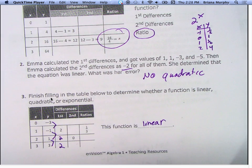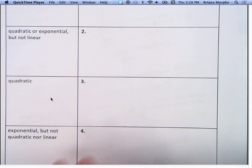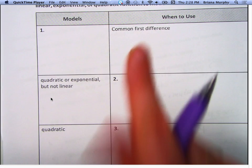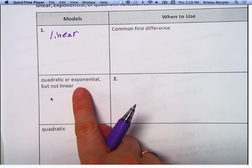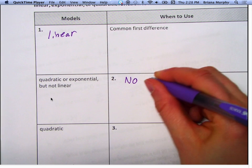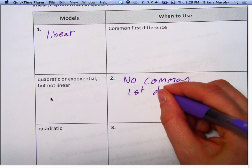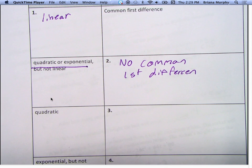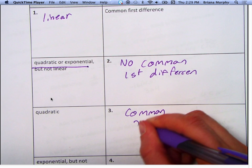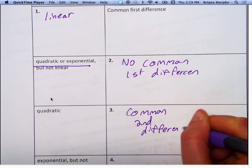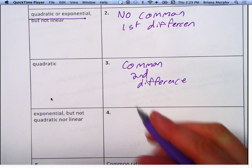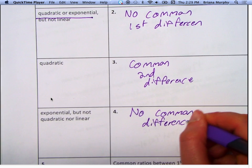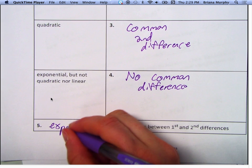Let's go to the literacy and vocabulary page. Which one has a common first difference? Linear. Quadratics or exponential — but not linear — have no common first difference. Quadratic has a common second difference. What's true about exponential? It's a ratio. They don't have a common second difference either.